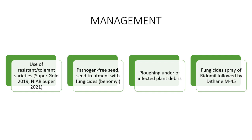Deep plowing is recommended so that sunlight exposure helps destroy infected plant debris. Fungicide sprays should be applied if the disease appears; Ridomil and Dithane are recommended fungicides. Spray again as needed and the disease will be controlled. That was all about the brown leaf spot of rice — thank you very much.